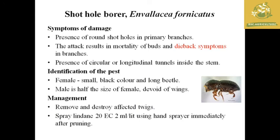The next pest is the shot hole borer, with the scientific name Xyleborus fornicatus. Symptoms include round shot holes in primary branches, resulting in mortality of buds, dieback symptoms in branches, and circular or longitudinal tunnels inside the stem. The male is a small black beetle, and the male is half the size of the female; only the female has wings. Management: removal and destruction of affected twigs and spraying of Lindane 20 EC at 2 ml per liter using a hand sprayer immediately after pruning.